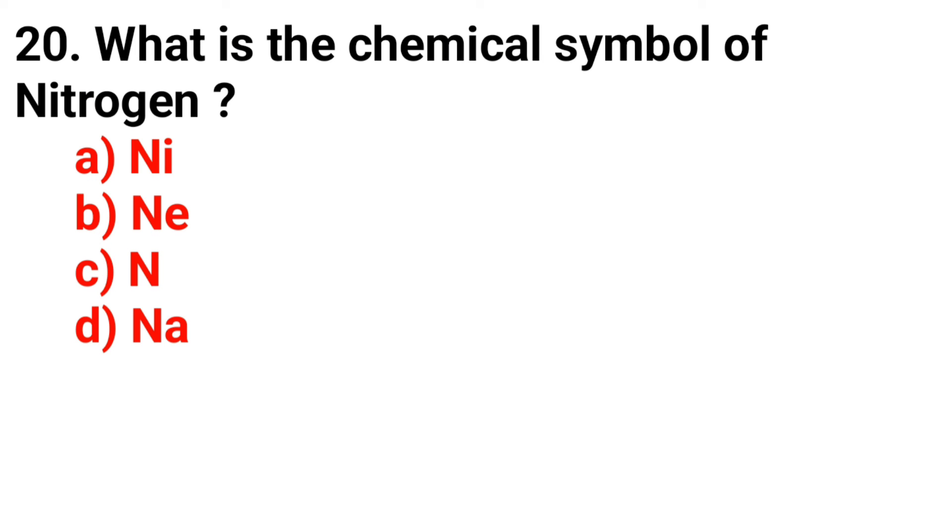Question 20: What is the chemical symbol of nitrogen? Answer: option C, N.